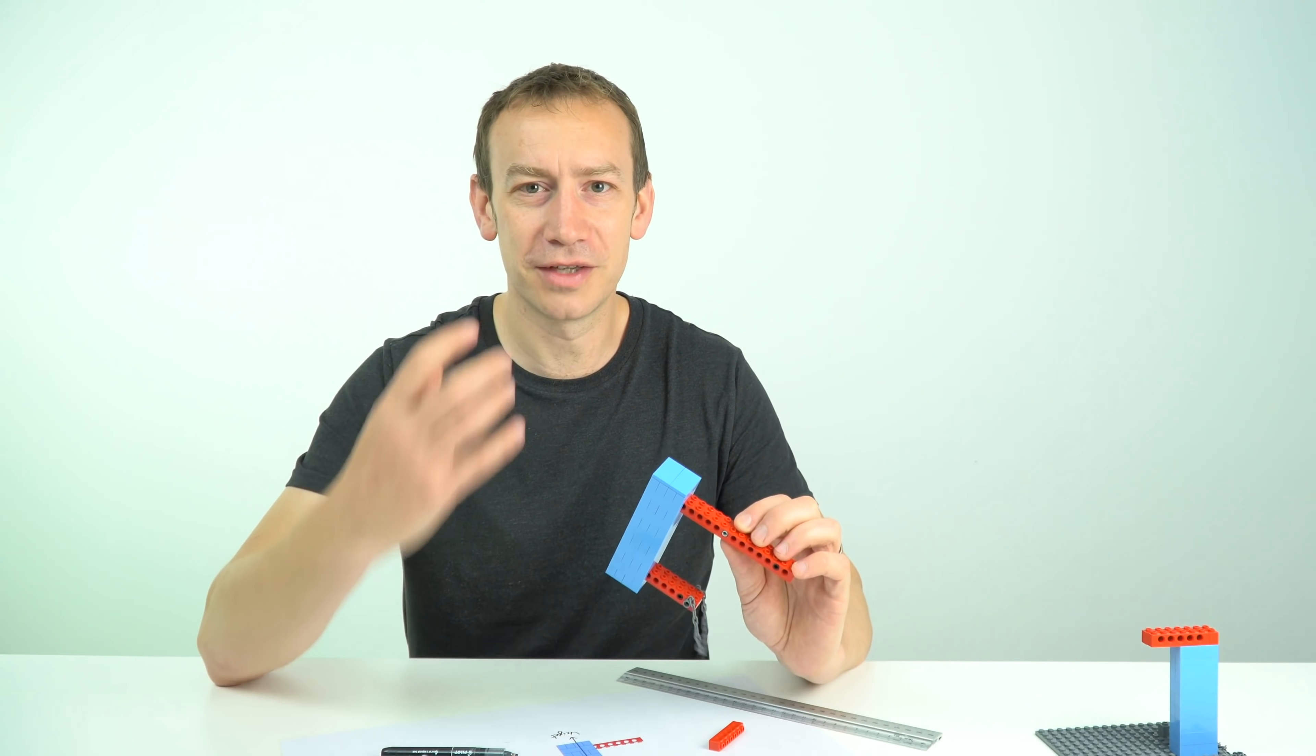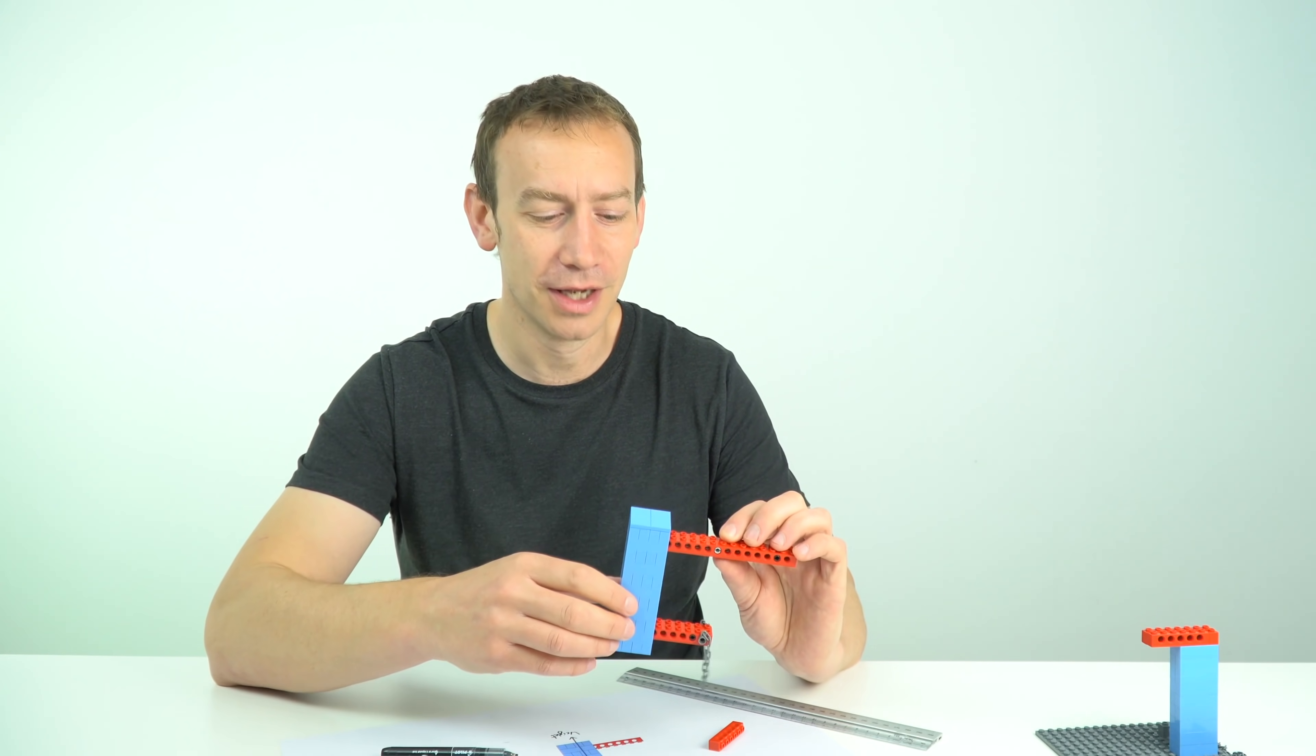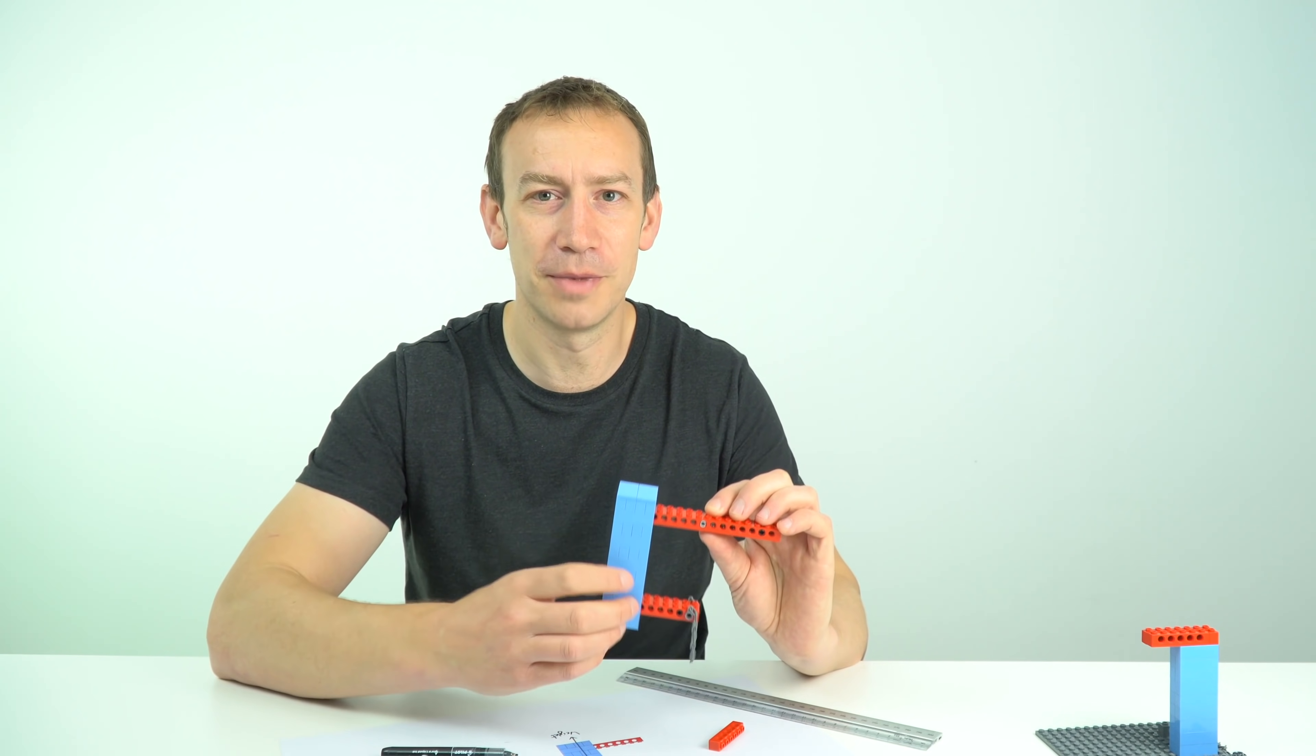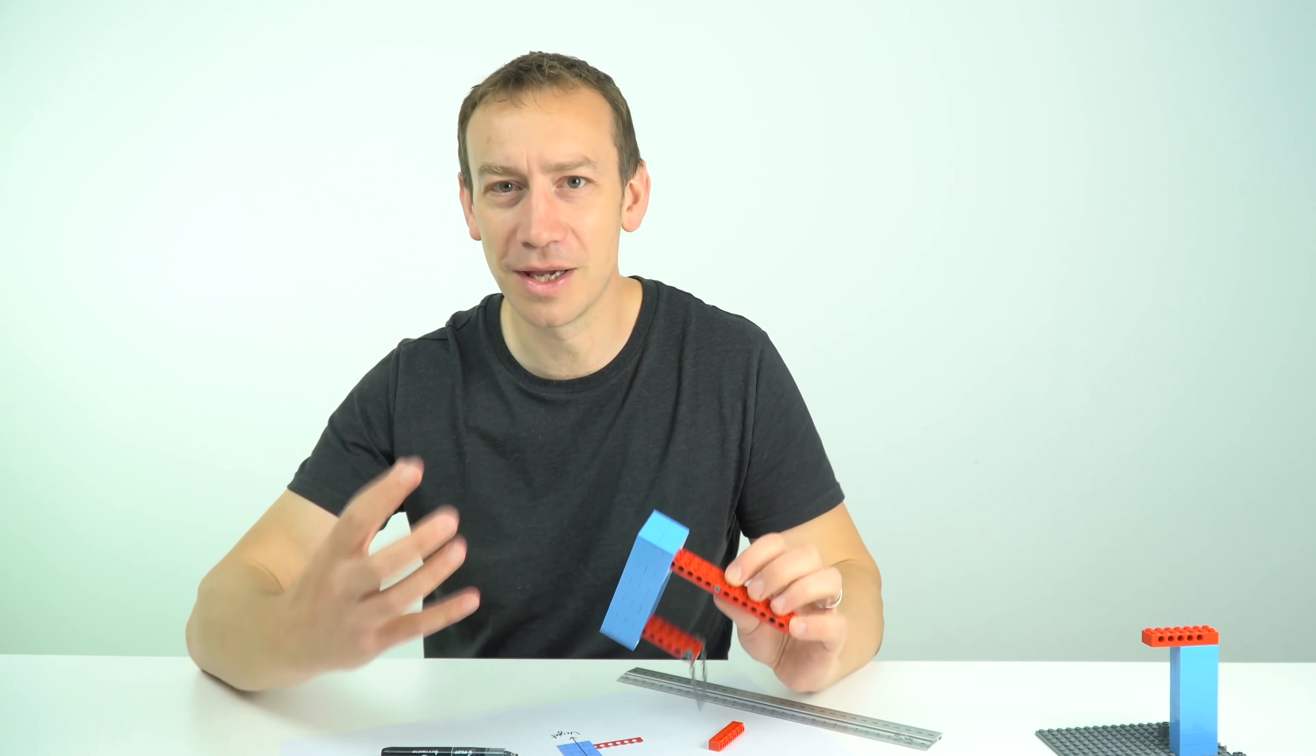And what you'll notice is a lot of these tensegrity structures which are really stable, they have a lot of mass which is quite far away from the pivot and quite low down, and that's going to make it more stable.